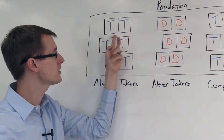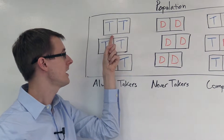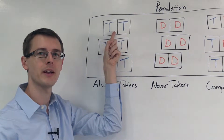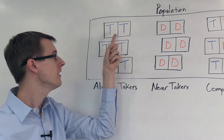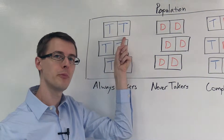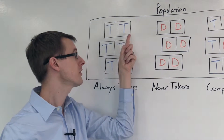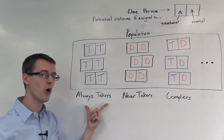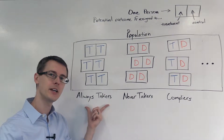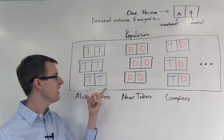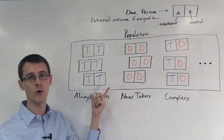For example, this person here — when they're assigned to the treatment group, they actually take the treatment. And when they're assigned to the control group, they also take the treatment. So this person is an always taker. Regardless of which group they're assigned to, they always take the treatment. And there are other people in our population who are also always takers.